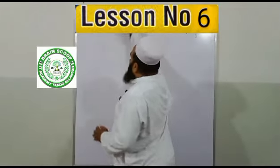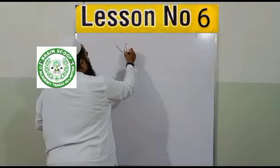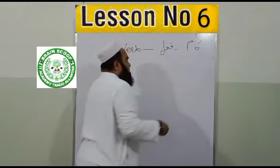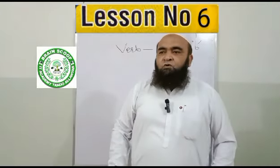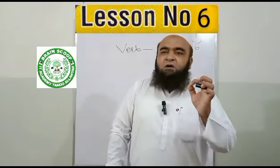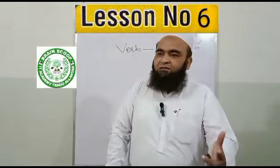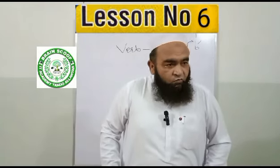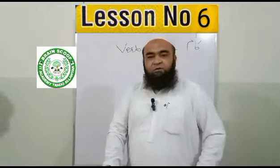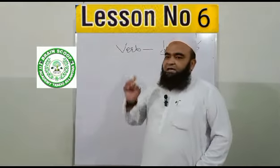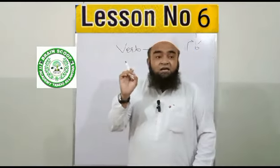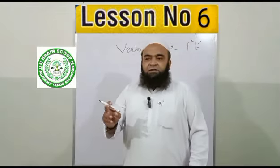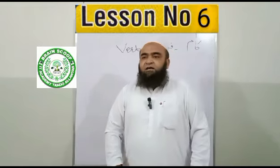Verb کیا ہوتا ہے؟ اردو میں کیا کہتے ہیں؟ فعل — کام۔ وہ لفظ جو کسی کام کا ہونا یا کرنا یا حرکت ظاہر کرے، وہ کیا کہلاتا ہے؟ فعل کہلاتا ہے۔ انگلیش میں اس کو verb کہتے ہیں۔ Verb کسے کہتے ہیں؟ ایسا لفظ جو کسی کام کا ہونا یا کرنا ظاہر کرے، جیسے 'loves' — وہ verb کہلاتا ہے۔